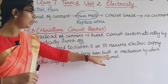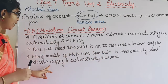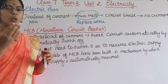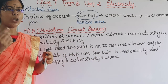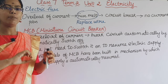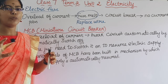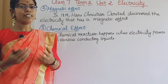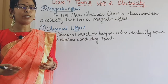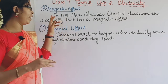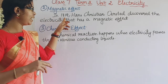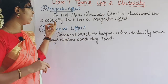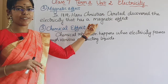It will automatically be switched to a normal current. The first is the heating effect, and the second is the magnetic effect. In 1819, Hans Christian Oersted discovered that electricity has a magnetic effect.